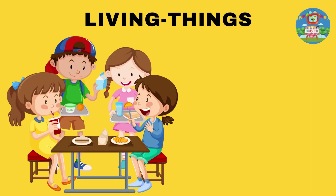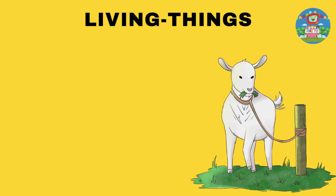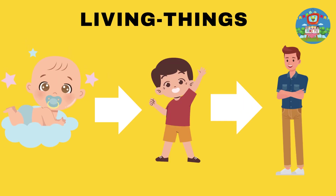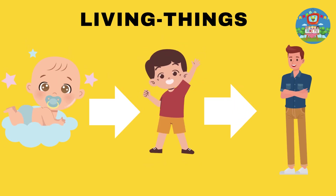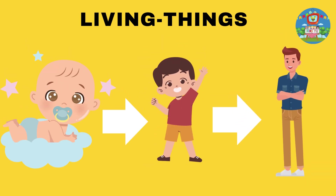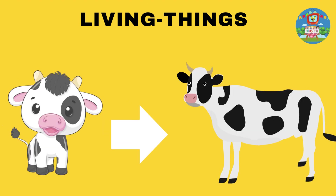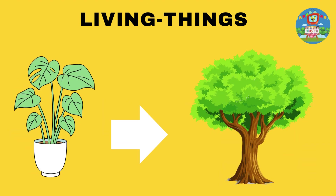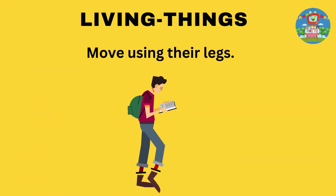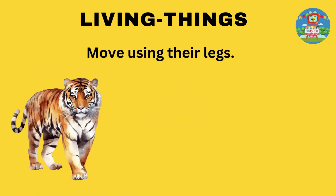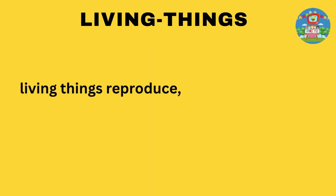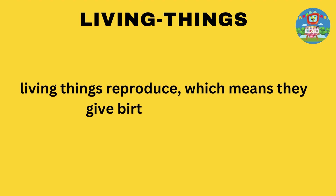Living things eat food. Living things grow according to their age. Living things can move using their legs. Living things reproduce, which means they give birth to their kind.